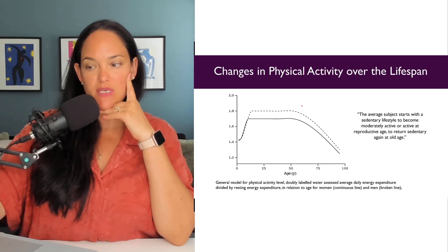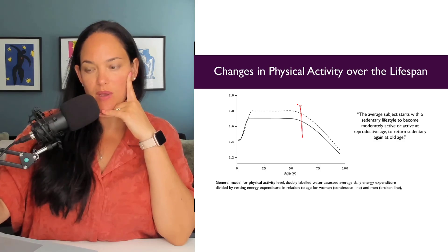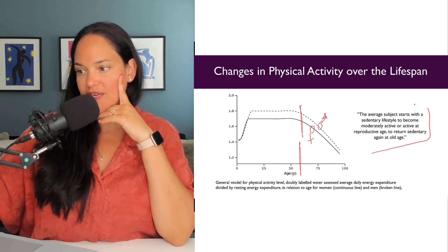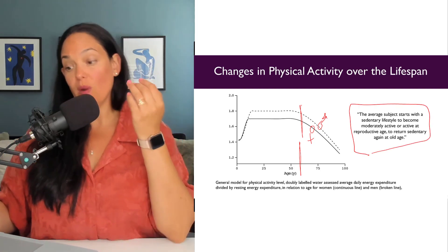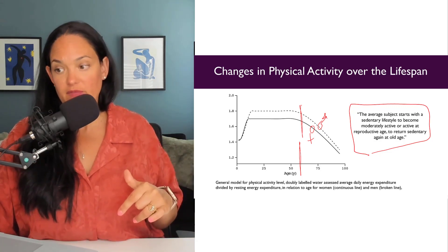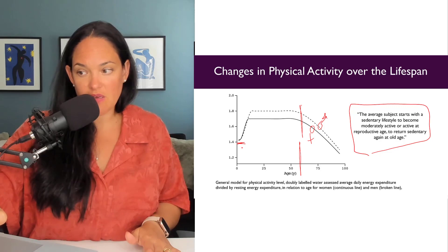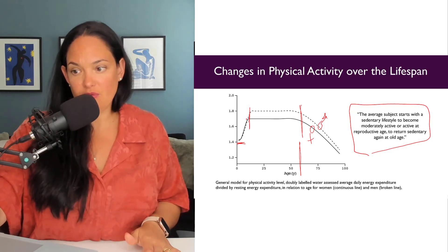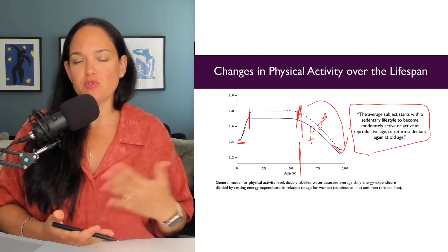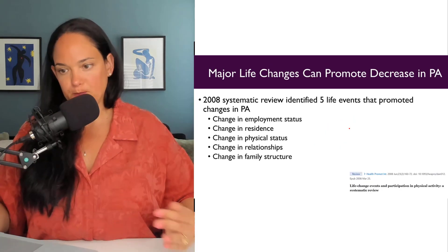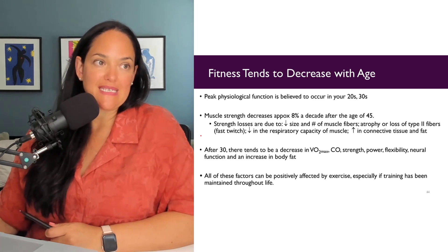When we're talking about physical activity, this population is especially important because we notice that activity levels for both women and men tend to really drop off in the older age group. This article from Obesity Reviews, based on doubly labeled water energy expenditure data, summarizes it well: the average subject starts with a sedentary lifestyle, becomes moderately active or active during adulthood, and then returns back to sedentary behavior. So we may want to reduce physical inactivity and sedentary behavior in older adults.